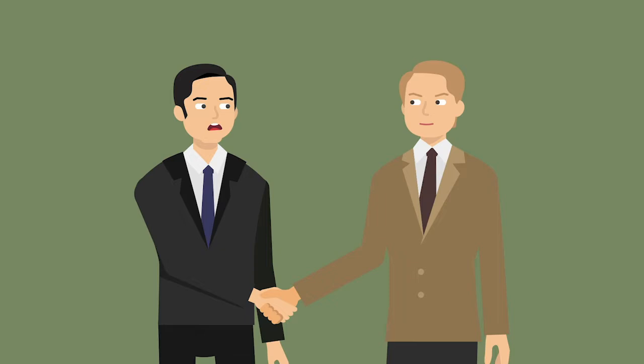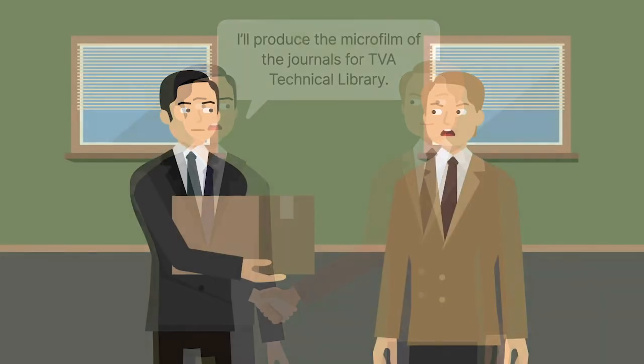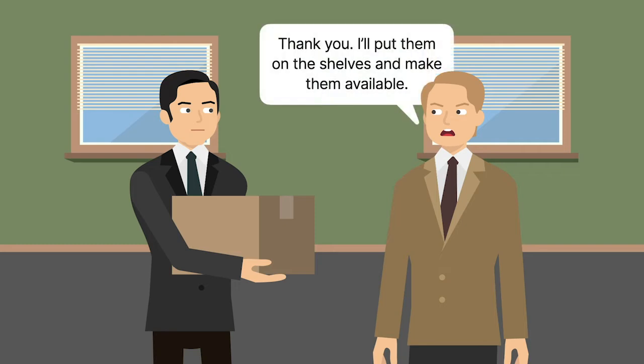Earl Daniel, the director of the Tennessee Valley Authority, or TVA, Technical Library, entered into an oral agreement with Robert Campbell for the production of microfilm of 18 sets of technical trade journals. Campbell photographed and developed the journals pursuant to the agreement and delivered them to the technical library, where they remained on the shelves and available for approximately two months.